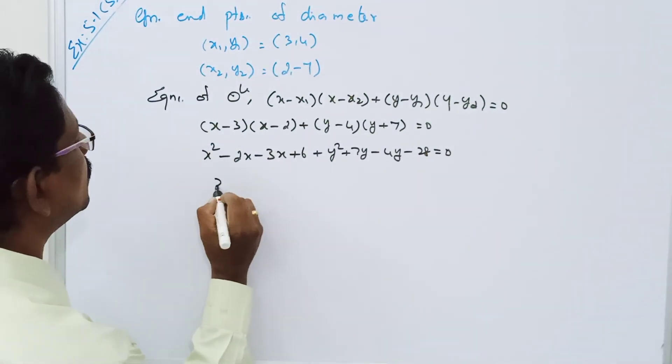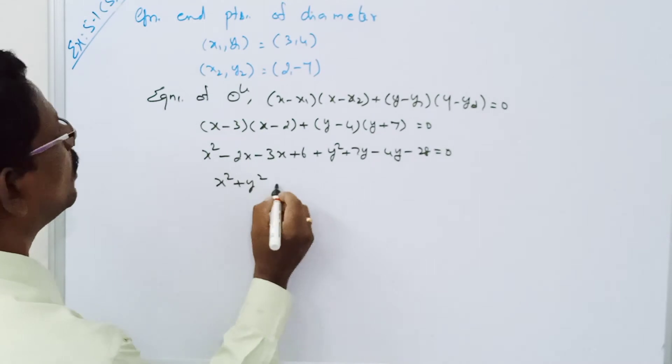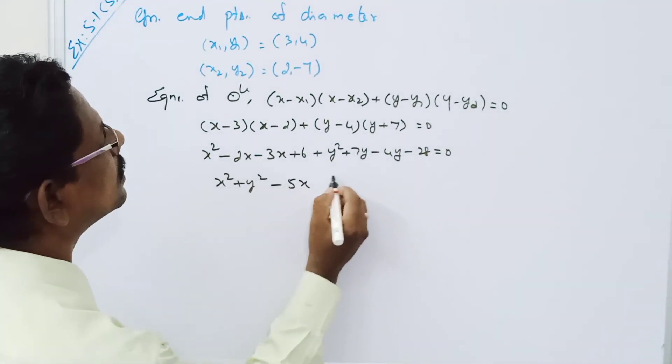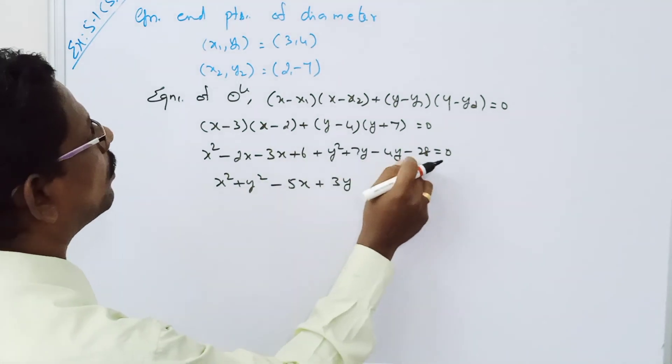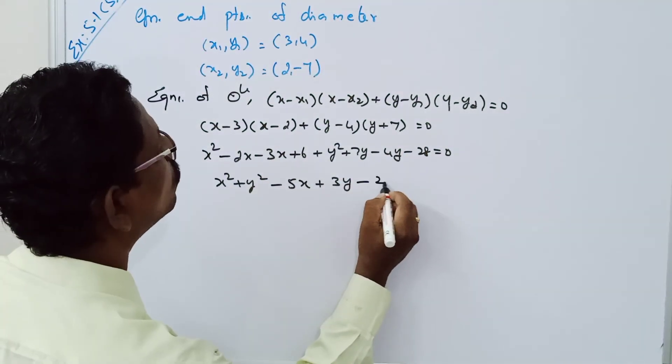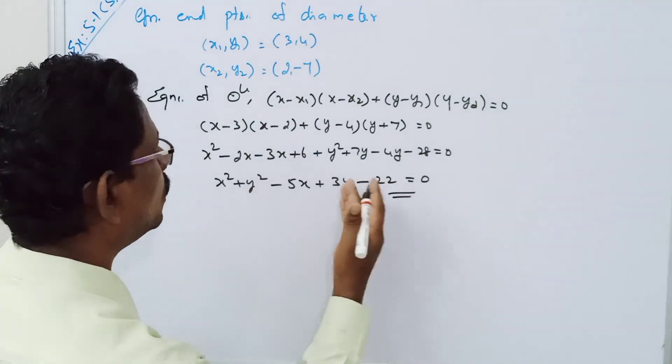That is x² plus y² minus 5x plus 3y plus 6 minus 28 minus 22 equal to 0, which is the required equation of the circle.